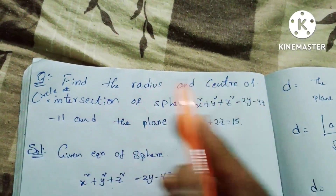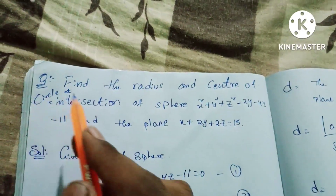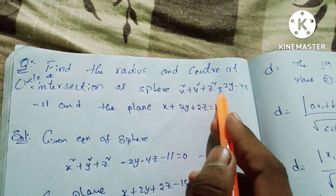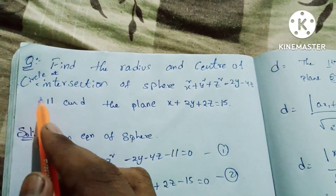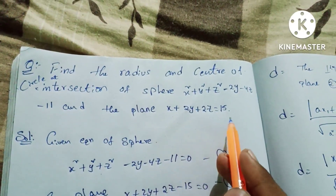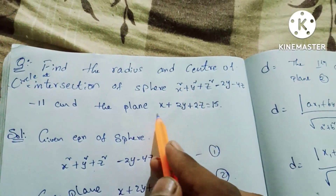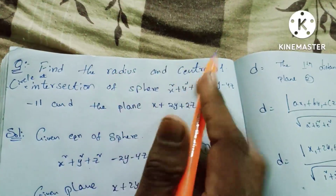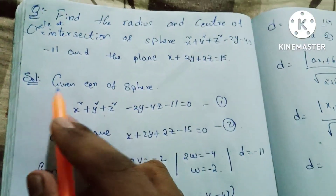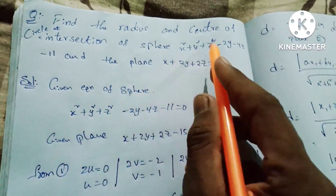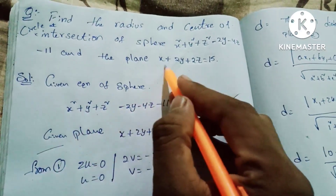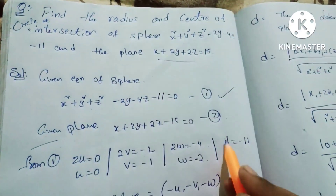Find the radius and center of the circle at the intersection of the sphere x² + y² + z² - 2y - 4z - 11 = 0 and the plane x + 2y + 2z = 15. We have one sphere equation and one plane equation. Let's do the solution. Given the equation of the sphere and the given plane, let's label them equation 1 and equation 2.